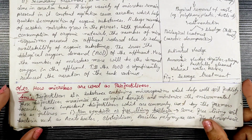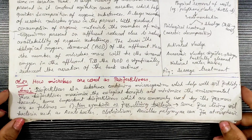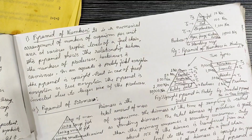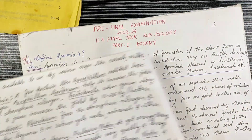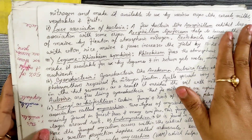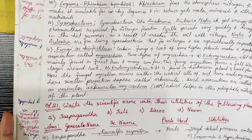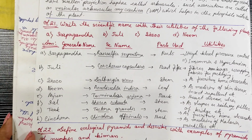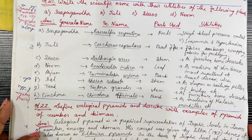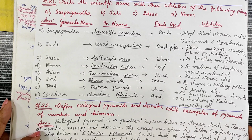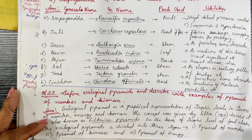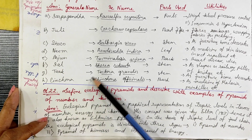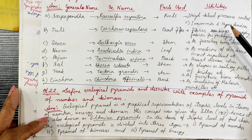Next: how are microbes used as bio-fertilizers? Next, the scientific names and uses of medicinal plants: Neem, Arjun, Chaal, Teak — listing their parts and utility.